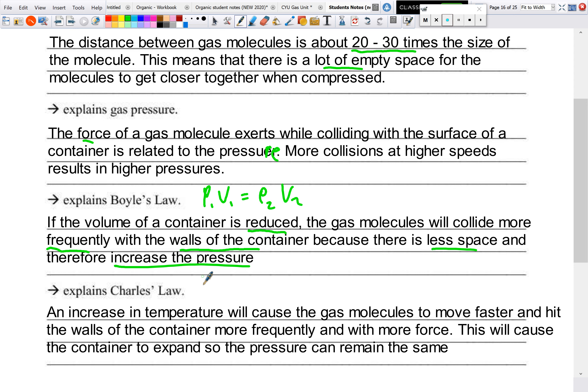And finally explain Charles' law. So remember Charles' law is V1 over T1 is equal to V2 over T2. So it relates volume and temperature. So we have right here an increase in temperature will cause the gas molecules to move faster and hit the wall's container more frequently and with more force. So this caused the container to expand so the pressure can remain the same. So we can't say the pressure will increase because this is under constant pressure conditions. That's why pressure isn't in the equation. So this is where the volume will actually adjust so the pressure stays the same. So that is using kinetic molecular theory to describe our four things: why gas are compressible, why they have pressure, explain Boyle's law and Charles' law.